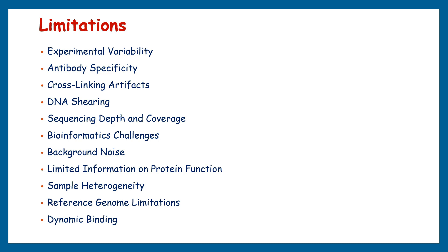There are also challenges in validating ChIP sequencing results. They can be complex and might require additional experiments — such as ChIP-qPCR or functional assays — to confirm the biological relevance of identified binding sites. Despite these limitations, ChIP sequencing remains a valuable tool for investigating protein-DNA interactions and chromatin dynamics. We should carefully design experiments, use appropriate controls, and integrate ChIP sequencing data with other approaches to obtain a more comprehensive understanding of biological processes.